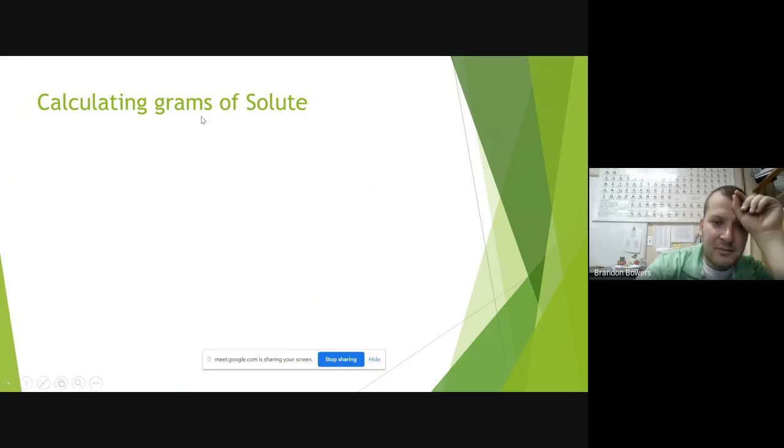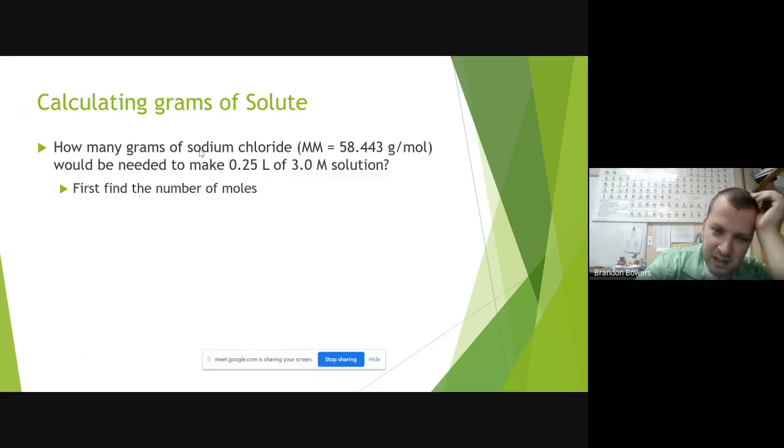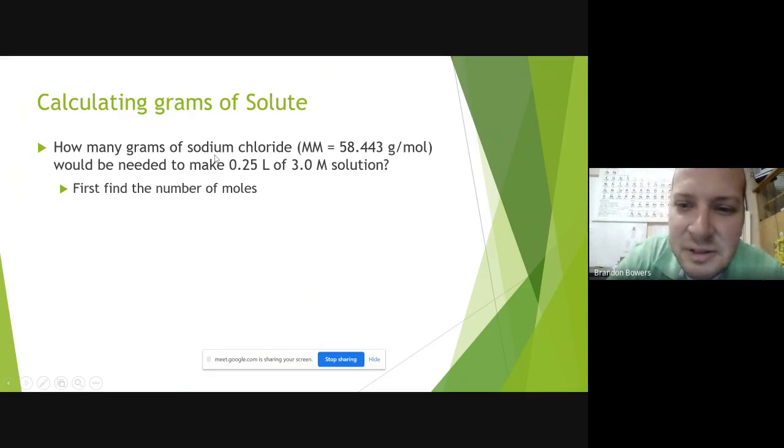One last type of problem, calculating grams. This is going back to like chapter two. Holy smokes. But I believe in you guys. It's been a minute since we learned this, but we're going to talk about finding grams. So how many grams of sodium chloride, the molar mass is 58.443 grams per mole, would be needed for 0.25 liters of a 3.0 M solution? So there's a lot of information.